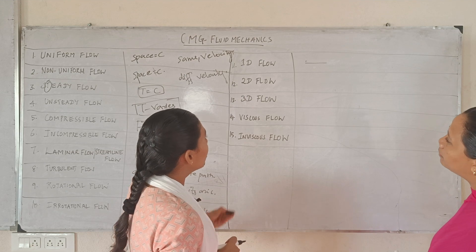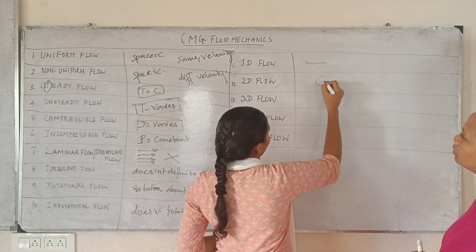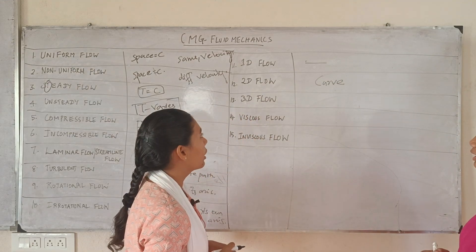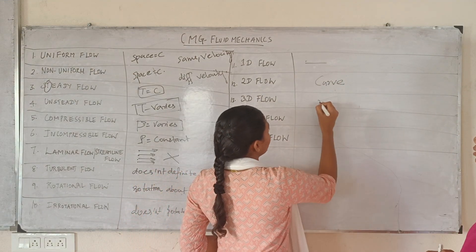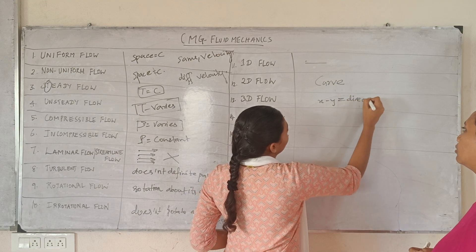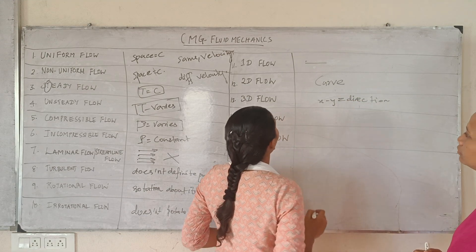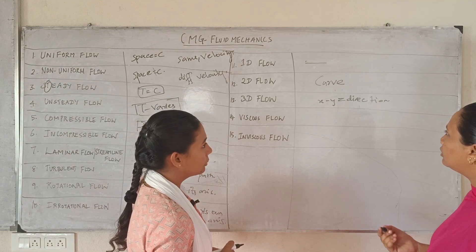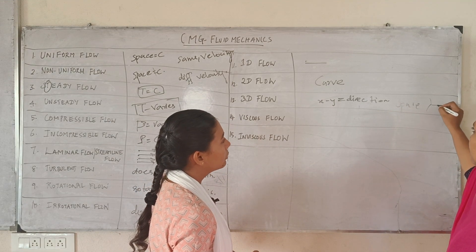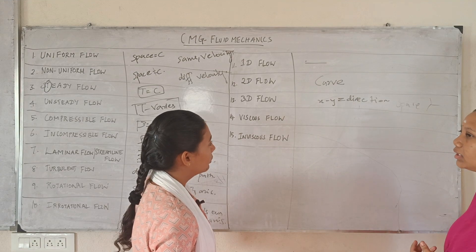2D flow — the fluid particles are represented by a curve in a streamlined flow. 3D flow — the flow occurs in three mutually perpendicular directions: x, y, and z. It exists in 3D space.